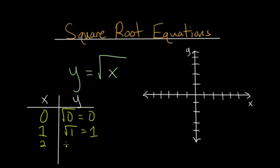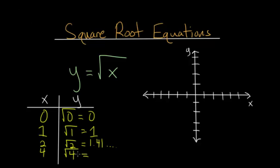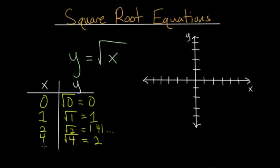The square root of 2 is what we call an irrational number — essentially 1.41 with a decimal that goes on forever with no pattern, similar to pi. For x equals 3, we'd get a similar infinitely long decimal, so I'm going to pick x equals 4, which gives a clean answer: the square root of 4 is 2. And for x equals 9, the square root of 9 is 3.